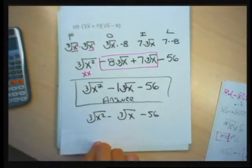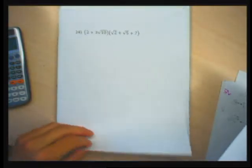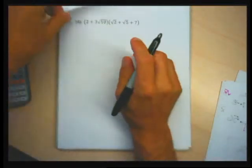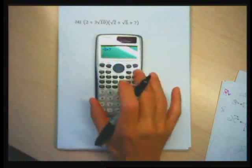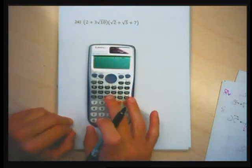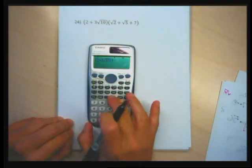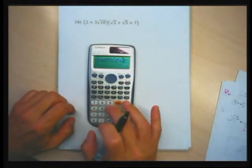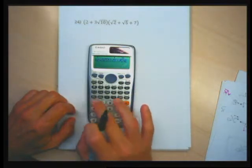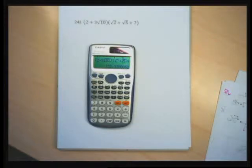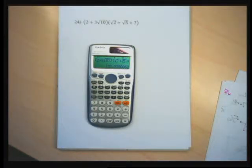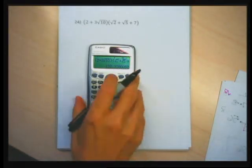The next problems — 24 and 26 — the probability of those being on the test is just about zero, so if you're pressed for time it's not a big deal. Problem 24 is nice with only square roots and no letters, so I tried my calculator first. But it blew my calculator's mind — it only gave a decimal. This is too complex for my calculator, so I have to do the algebra.